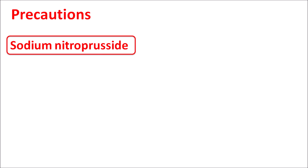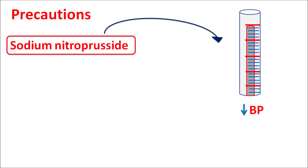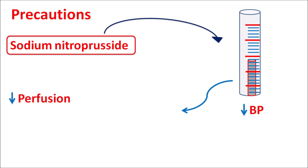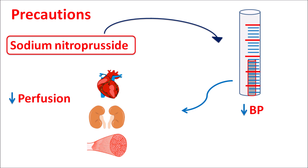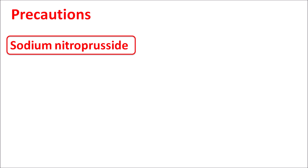Regarding precautions: sodium nitroprusside is used under emergency conditions. When given by IV infusion, blood pressure can suddenly fall. This reduction in blood pressure may result in decreased perfusion pressure, so vital organs like the heart, kidneys, and muscles receive less blood supply and their functionality is reduced. Therefore this drug should be carefully given, and any hypotension must be closely monitored, as it reduces perfusion pressure to vital organs.